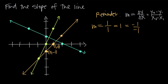Sometimes you're not going to be given a graph of the line — you're only going to be given two points. If that's the case, how do you find the slope? We use the formula: m equals the change in y over the change in x, which is also equal to y-sub-2 minus y-sub-1 over x-sub-2 minus x-sub-1.